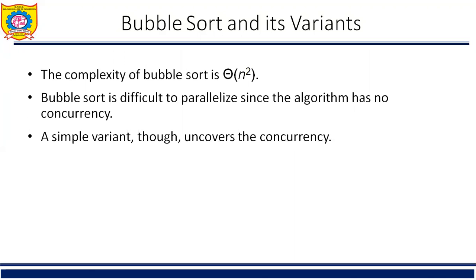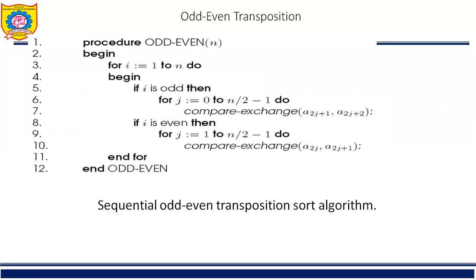The complexity of bubble sort is O(n²). Bubble sort is difficult to parallelize since the algorithm has no concurrency. A simple variant, however, uncovers the concurrency, and that variant is odd-even transposition. The odd-even transposition sort sorts N elements in N phases, each of which requires N/2 compare-exchange operations.